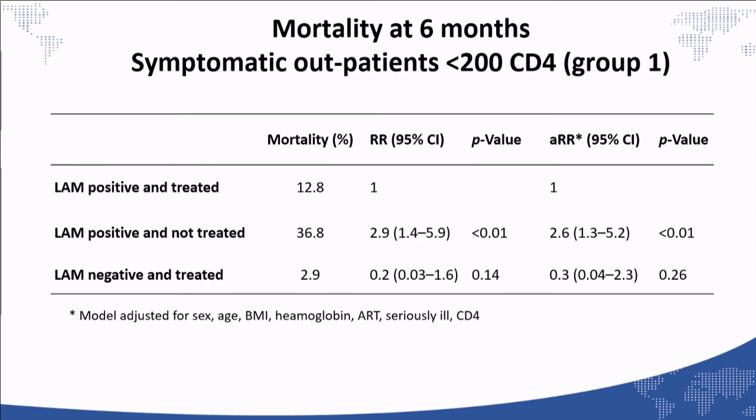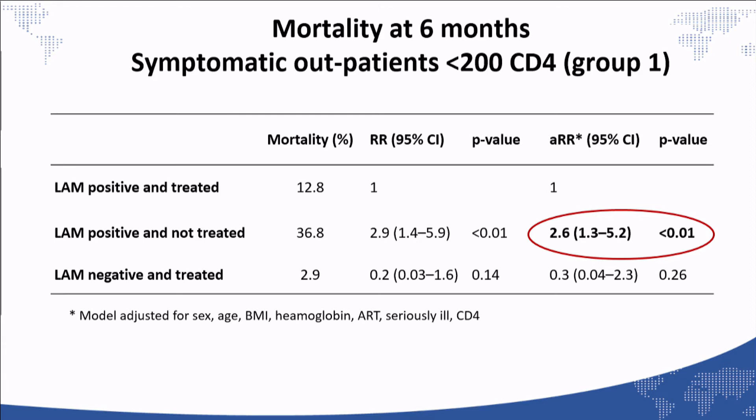Regarding mortality at six months, in group one — symptomatic ambulatory patients with CD4 less than 200 — we compared LAM positive versus LAM negative patients, and also LAM positive untreated versus LAM positive treated. This comparison was possible because in Malawi, for a period of time, LAM could not be used for patient management per the national program. LAM positive untreated patients had higher mortality than LAM positive treated patients and LAM negative patients, and this higher risk remained after adjusting for factors such as being seriously ill and CD4 count.